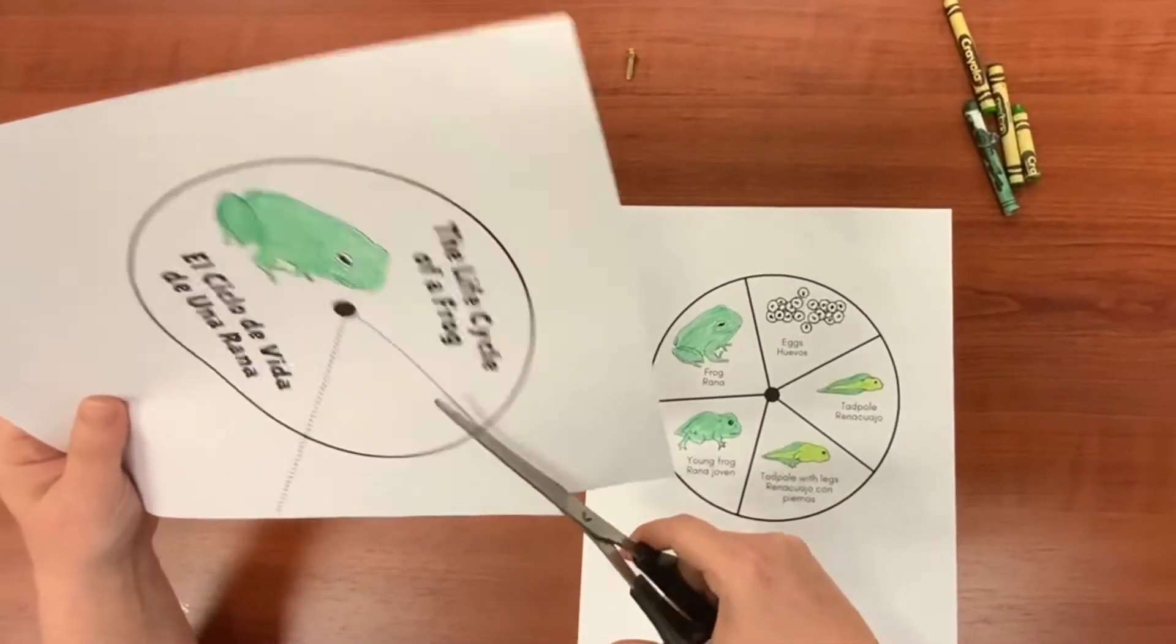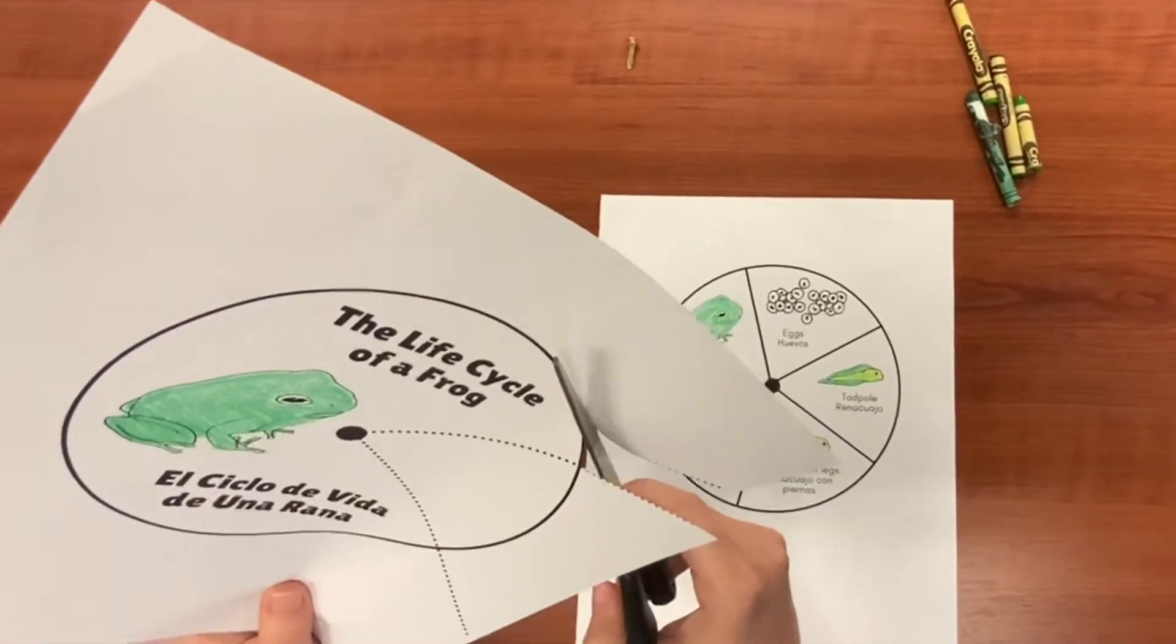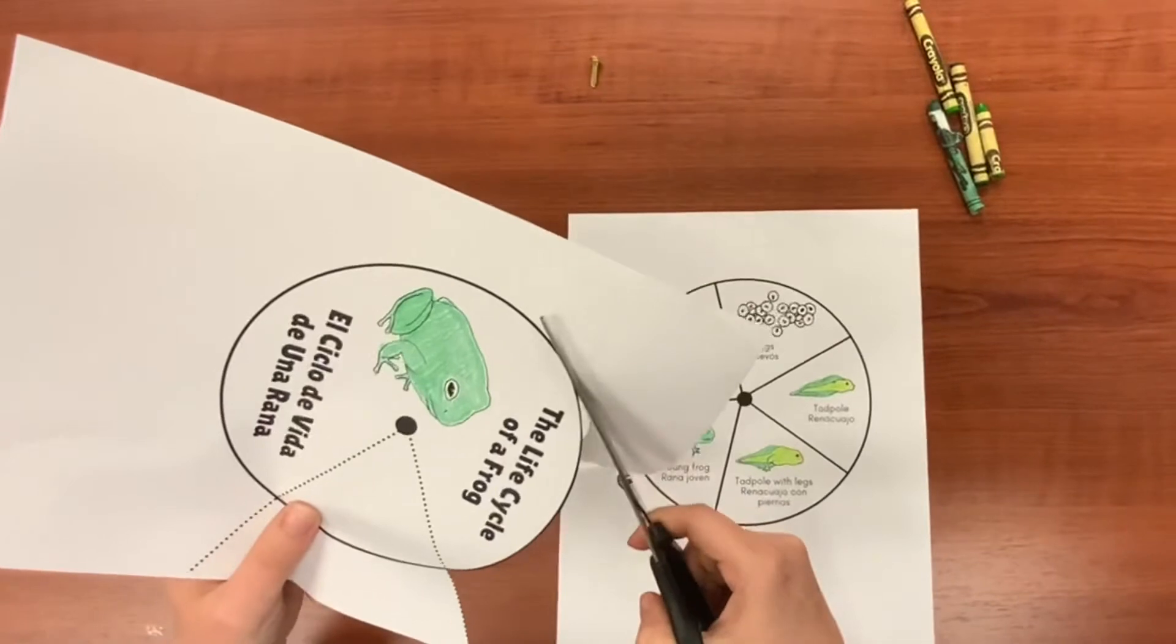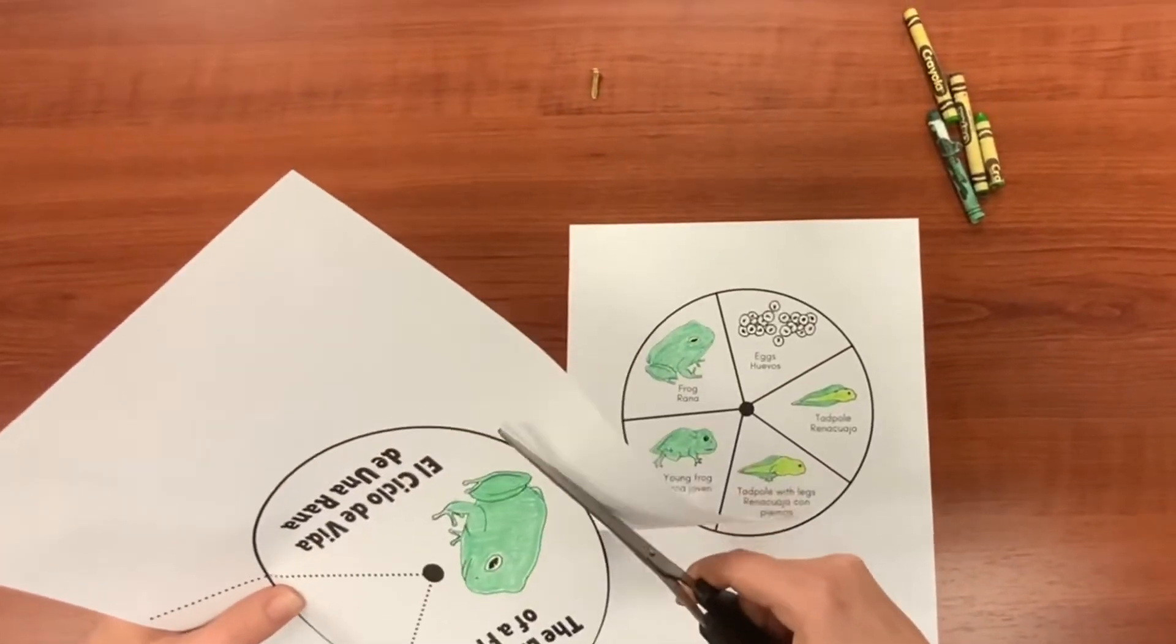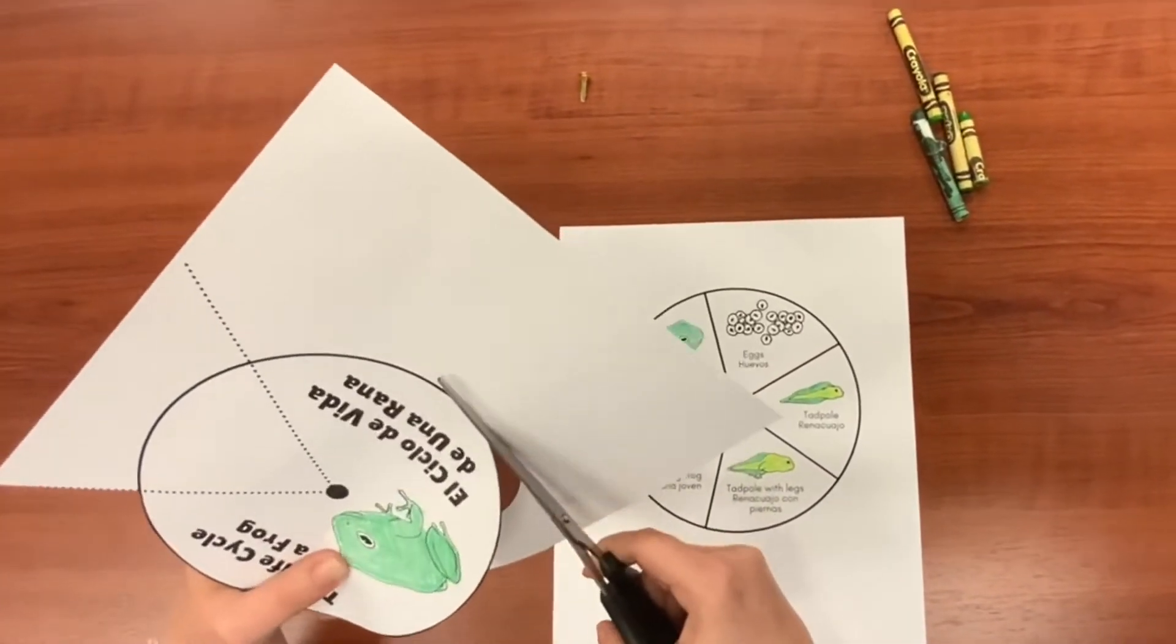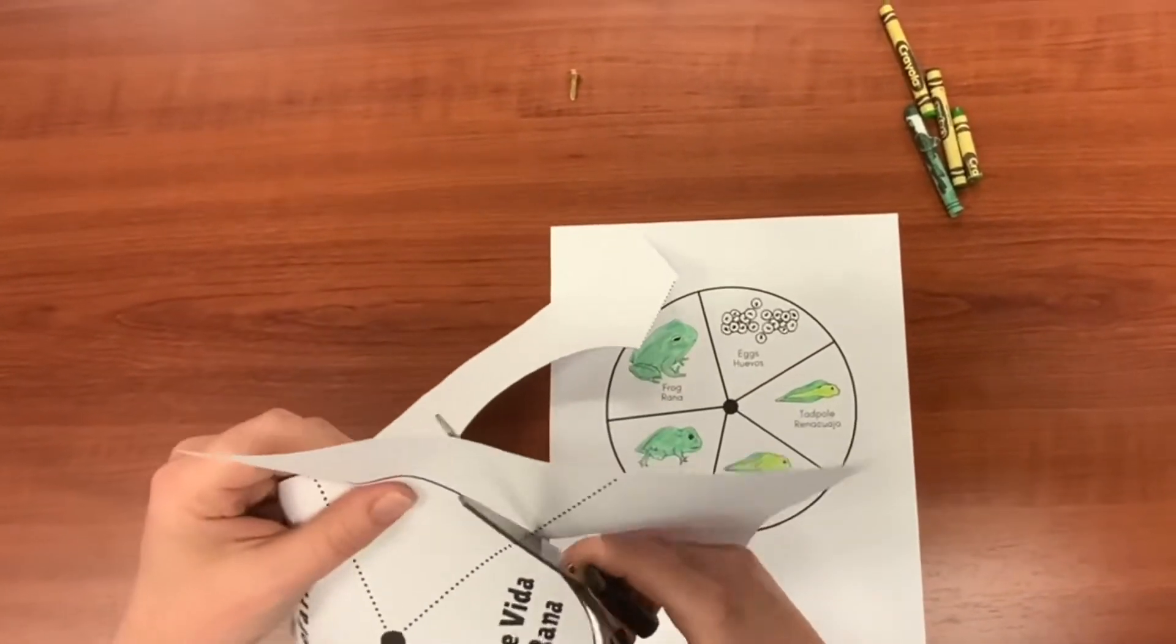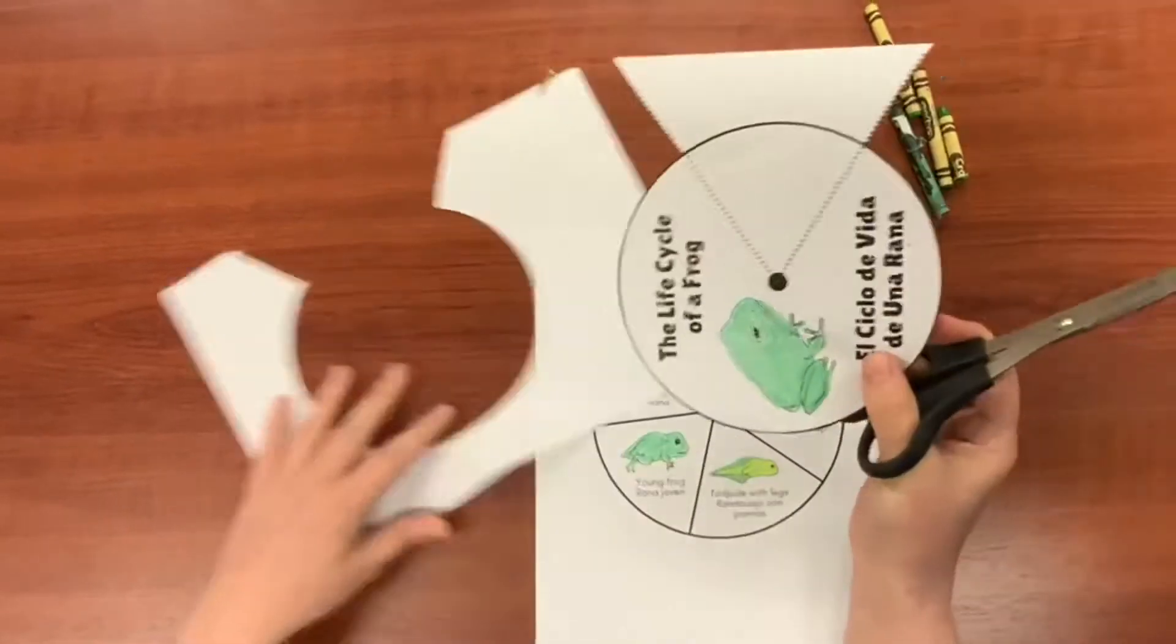So, on this first worksheet, I'm going to cut along the dotted line, then around the circle. This is the sheet with just the frog on it. And then when I reach the dotted line again, I'm going to cut along it. It makes kind of an interesting shape, doesn't it?